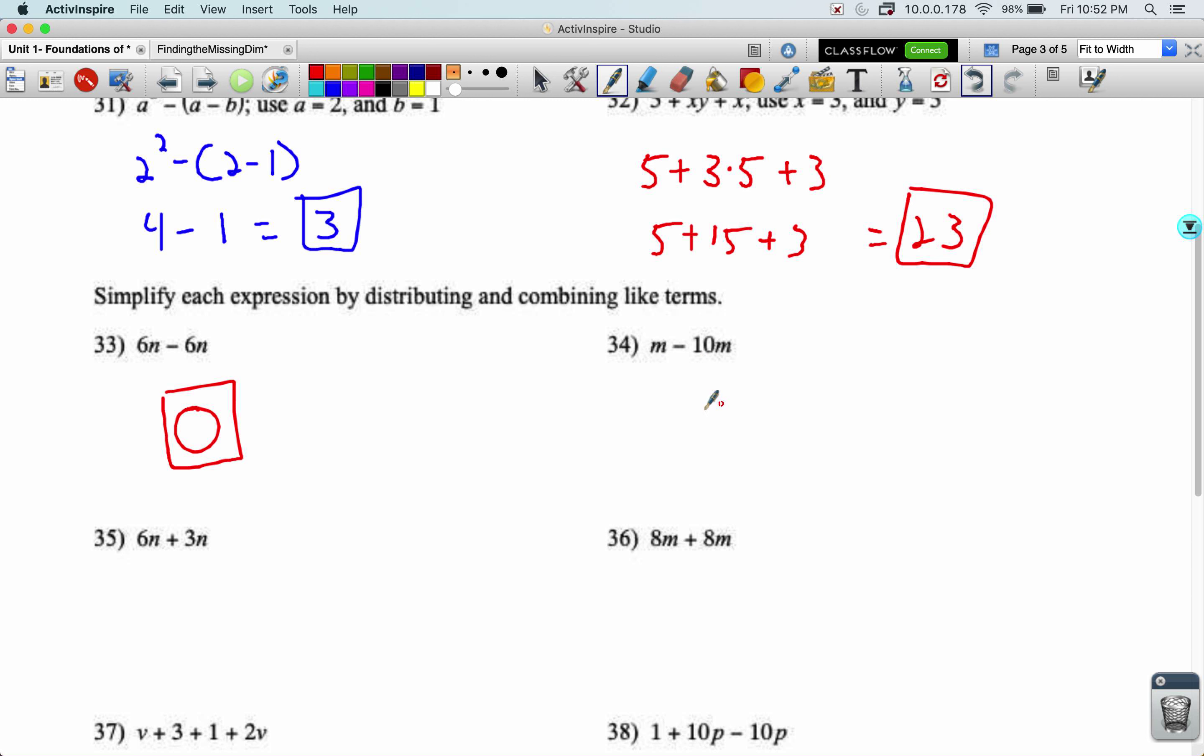M minus 10 N. This is going to become a negative nine N here. This here becomes a nine N. These are also like terms. This becomes a 16 N because those are like terms.